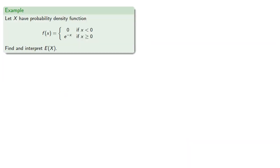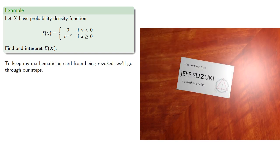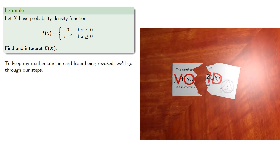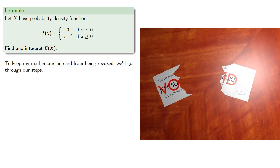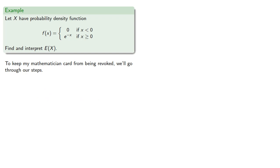Let x have the probability density function as follows. Let's find and interpret the expectation of x. Now, to keep my mathematician card from being revoked, we'll go through all the steps. There is some calculus here, but if the calculus seems too daunting, rest assured that the calculus is not the point of the process.